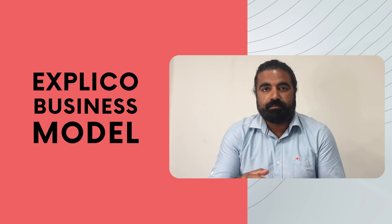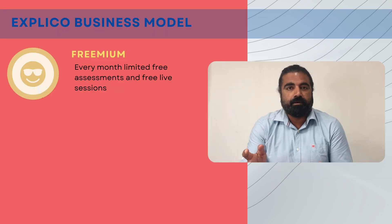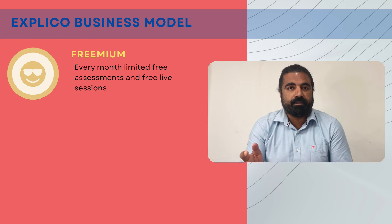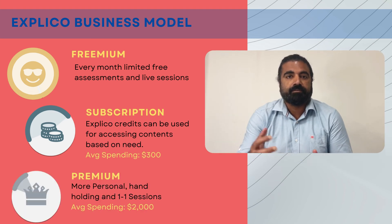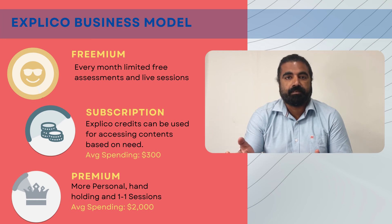It works in three segments. The first is the freemium model, where we keep certain limited access for users every month so they can remain constantly in the system. Second is the subscription model, where they can buy credits and use them among their kids. And the third is where the child needs more one-to-one attention — yes, there is a premium tier for that.